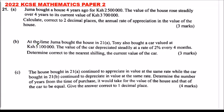2022 KCSE Mathematics Paper 2, Question Number 21, Part A. Juma bought a house four years ago for Kenya shillings 2,500,000. The value of the house rose steadily over four years to its current value of 3,700,000 Kenyan shillings. Calculate correct to two decimal places the annual rate of appreciation in the value of the house.